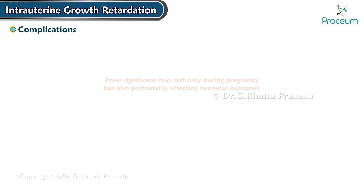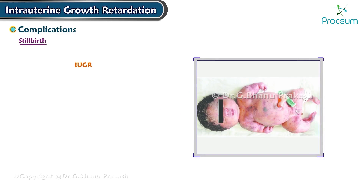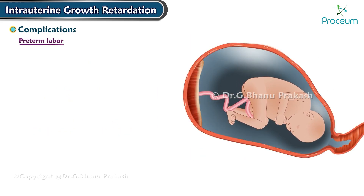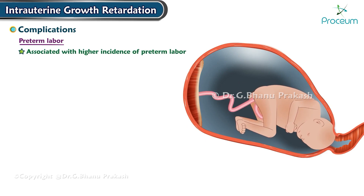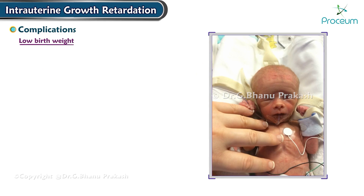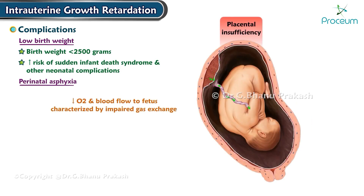Intrauterine growth restriction poses significant risks both during pregnancy and postnatally. It significantly increases the risk of stillbirth due to placental insufficiency and compromised fetal oxygenation and nutrient supply. It is also associated with a higher incidence of preterm labor, often necessitated by non-reassuring fetal status or maternal complications. Infants born with intrauterine growth restriction frequently have a birth weight below 2500 grams, categorizing them as low birth weight, placing them at increased risk of sudden infant death syndrome and other neonatal complications.